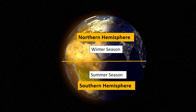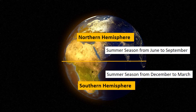The third difference is seasons. Seasons in the Northern and Southern Hemisphere are totally opposite — when it is winter in the Northern Hemisphere, it is summer in the Southern Hemisphere. Summer in the Northern Hemisphere takes place between June and September, but in the Southern Hemisphere, summer takes place between December and March. Summers in the Northern Hemisphere are also a few days longer than summers in the Southern Hemisphere.